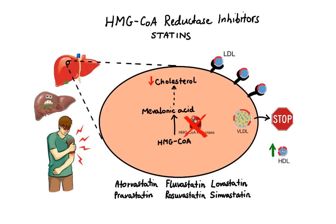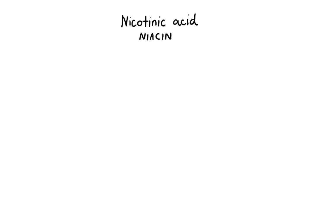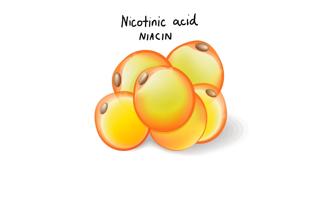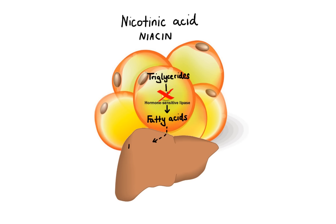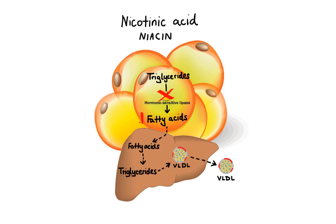The next group of lipid-lowering drugs includes only one agent, that is nicotinic acid, commonly known as niacin. Unlike statins, niacin works in adipose tissue, where it inhibits an enzyme called hormone-sensitive lipase, which is responsible for the breakdown of triglycerides to free fatty acids. Normally, the liver uses these free fatty acids to make its own triglycerides, which then become an important component of VLDL. So by reducing levels of free fatty acids available for transport to the liver, niacin effectively decreases hepatic VLDL synthesis, which in turn leads to decreased levels of LDL.